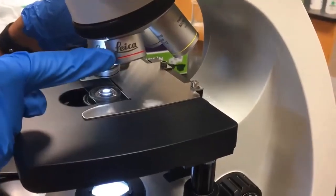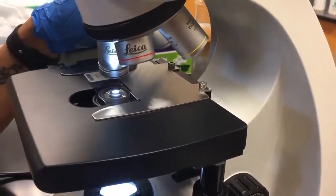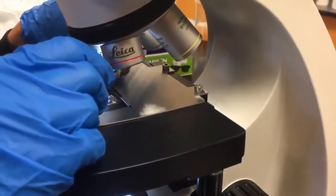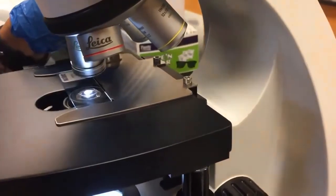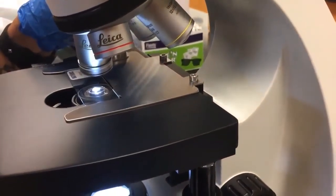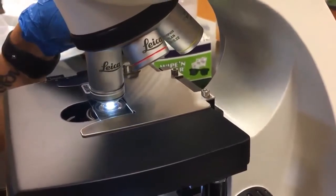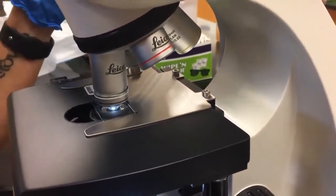When you're in between the scanning lens and the oil lens, place a drop of oil right there at the center of your slide. And then let the oil lens rotate and click into place.